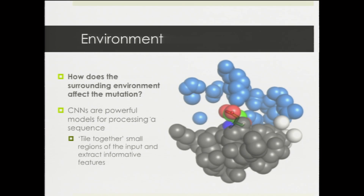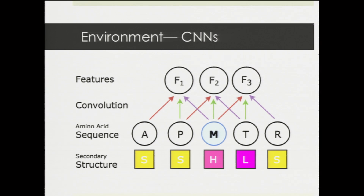The last step examines how the surrounding environment affects whether a mutation improves or worsens antibody binding. The theory is that looking at the surrounding sequence and structure can inform us whether a mutation will be harmful or favorable. I use deep learning models called convolutional neural networks, which work extremely effectively for ordered input, to extract features from the surrounding environment. For a mutation at position M, I take the surrounding sequence — AP to the left and TR to the right — and scan small filters through it. For example, a filter of size 3 first processes APM to output feature F1, then PMT to output F2, then MTR to output F3, extracting highly informative features about the mutation site's surroundings.